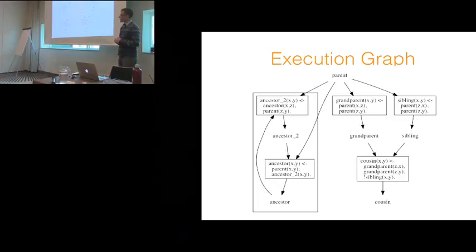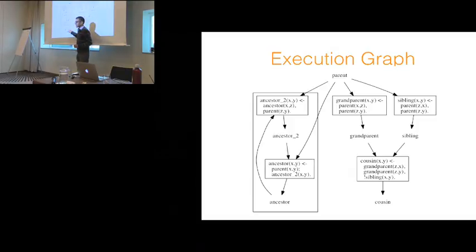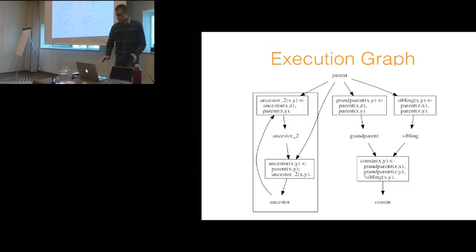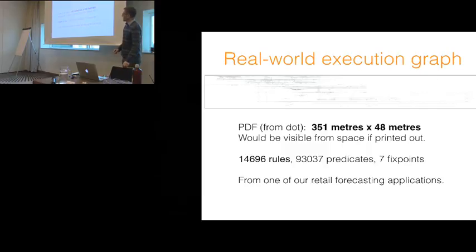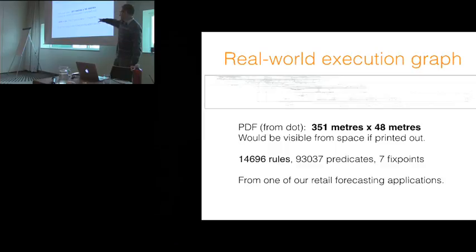For our simple parent-ancestor example, you can see the execution graph: there's a rule defining grandparent, with the parent relation as input, and it outputs grandparent. There's also a box indicating a recursive fixed point with a back edge making it cyclic. This is obviously a toy example. In practice we work on much bigger systems. One of the fellows in our group tried to visualize a real-world execution graph with dot. It ran for many hours and eventually produced output that was 351 meters long by 48 meters tall, with 15,000 rules, 100,000 predicates, and seven fixed points. How to navigate and debug in that kind of setting is kind of an open problem.